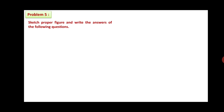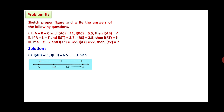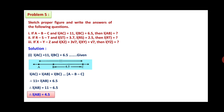Draw the proper figure and write the answers to the following. Number 1: if A, B, C is the betweenness, L(AC) equals 11 and L(BC) equals 6.5, find L(AB). From the figure, L(AC) equals L(AB) plus L(BC). Therefore, 11 equals L(AB) plus 6.5. Therefore, L(AB) equals 11 minus 6.5, so L(AB) is equal to 4.5.